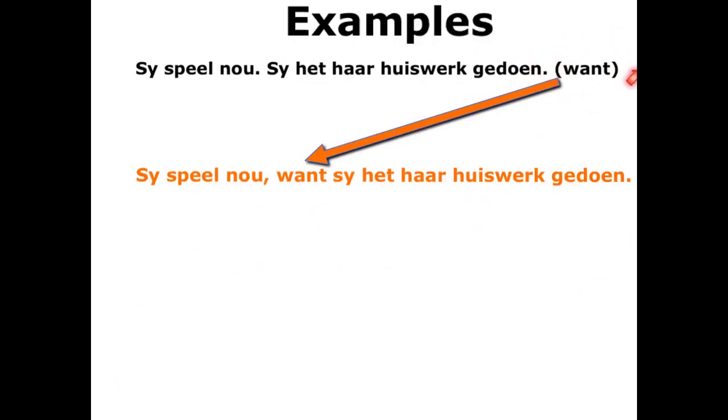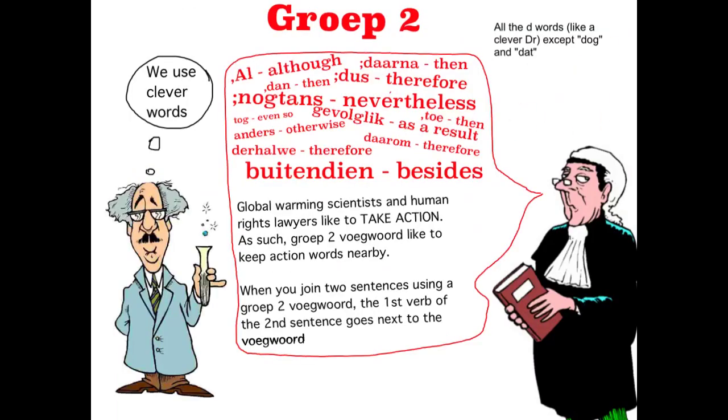It's super easy — child's play. You don't really need to remember to do anything special. Just remember that want is in the first group, and that's part of the word MOWED. That brings us to Groep 2.